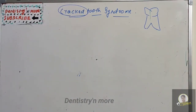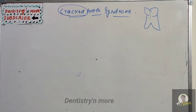Cracked tooth is an incomplete fracture of a vital tooth. It can be an anterior tooth or a posterior tooth, and it involves dentine and possibly the dental pulp.